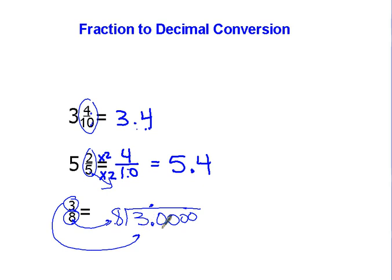Eight goes into thirty how many times? Eight times three is twenty-four. Subtract and get six. Bring down the zero. Eight goes into sixty seven times. That's fifty-six, subtract and get four. Bring down the zero. How many times does eight go into forty? Five times with no remainder. So three-eighths is equal to 0.375.